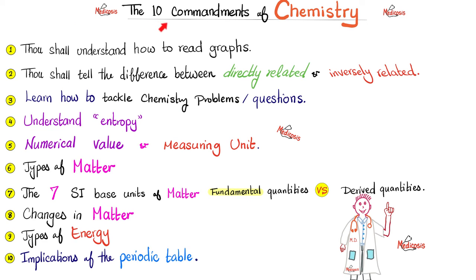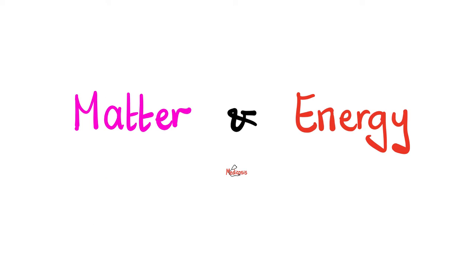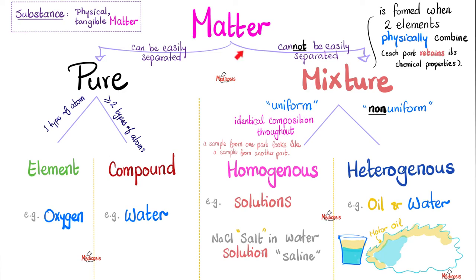Remember the 10 commandments of chemistry discussed in video number one? It's all about matter and energy, and we're talking about matter today. Matter could be pure or could be a mixture. What's the difference? If you can easily separate it, it's pure matter. But if it cannot be easily separated, it's a mixture.